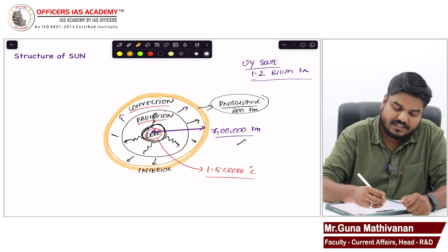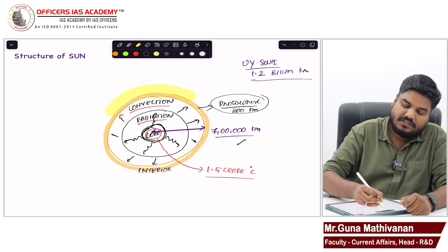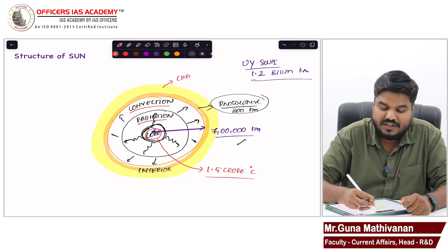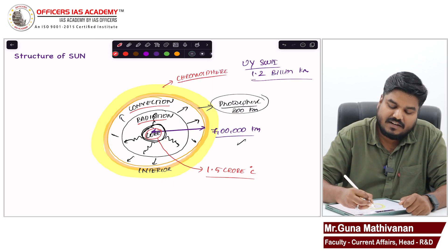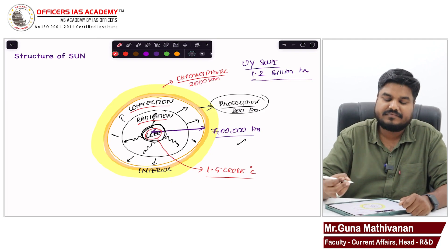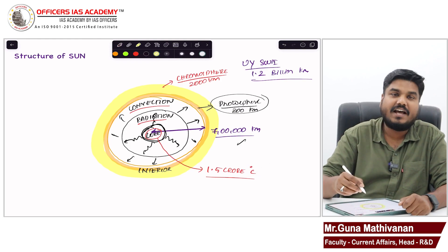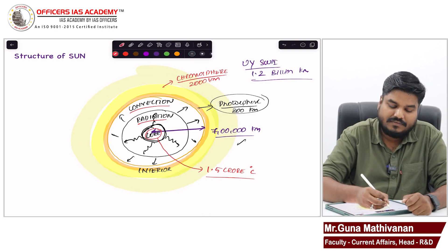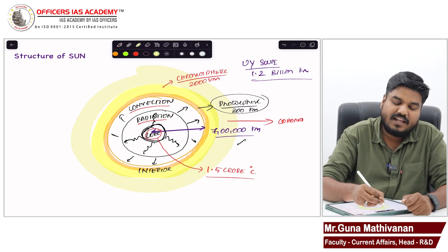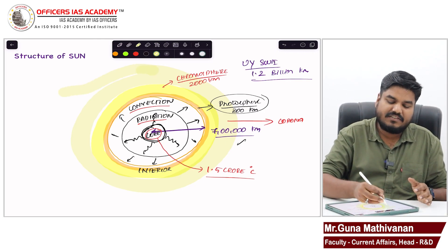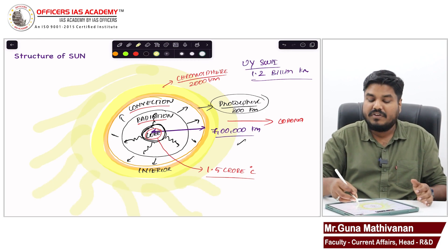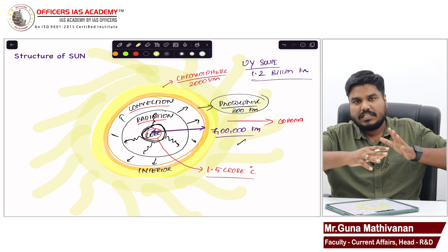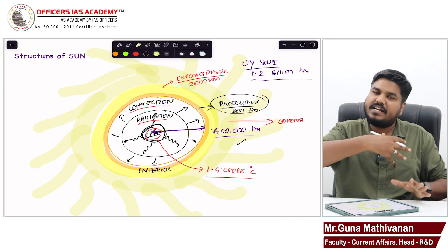The next layer around the photosphere is called the chromosphere, which has a thickness of close to 2000 kilometers. Then finally we have the outermost layer called the corona. This final layer is not a distinct layer — it extends in the form of solar wind, which spreads across our entire solar system and hits all the planets.